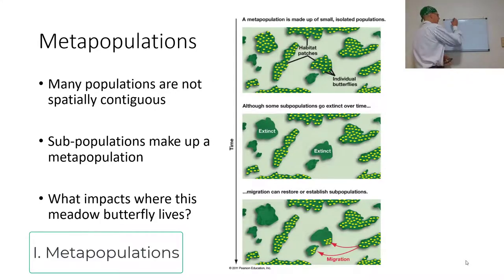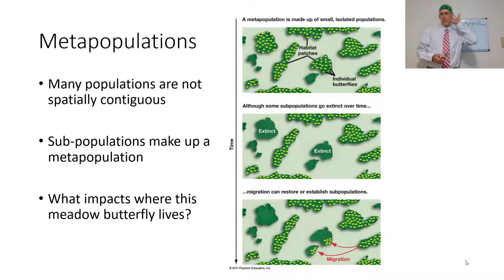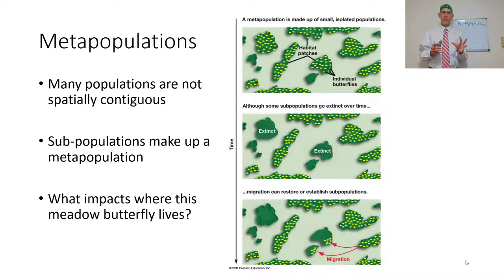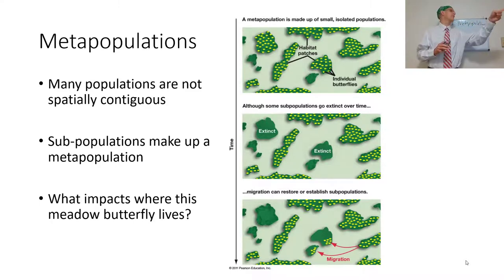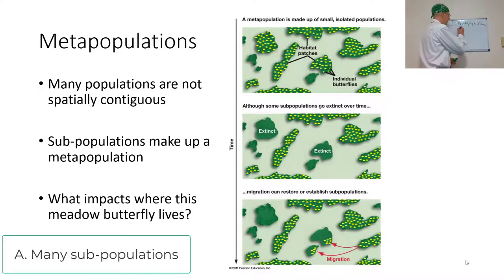So, metapopulations. It is important to remember that within an organism's distribution, they're not always contiguous. It's not like the entire distribution of American beavers is just one beaver within eyeshot of one another — a beaver sees another beaver sees another. That's not how the beaver population works. There are beaver patches. There are certain places where beavers live and certain places where they do not live. They may or may not have overlapping ranges. Populations are really not spatially contiguous; rather, they're made up of many subpopulations.